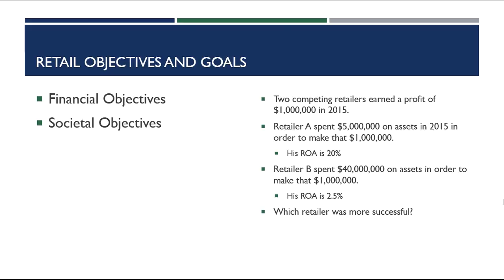Another category of objectives that retailers have are societal objectives. Retailers, when they go into business, will generally have some societal objectives in addition to their financial objectives. Societal objectives are geared towards making the world a better place — for example, providing employment opportunities in a low-income area, or for minorities, veterans, or people with disabilities. A retailer might also only sell environmentally friendly products or plan on supporting community events. These objectives are more difficult to measure than financial ones, but a retailer will look at the end of the year to see if they met their societal objectives.